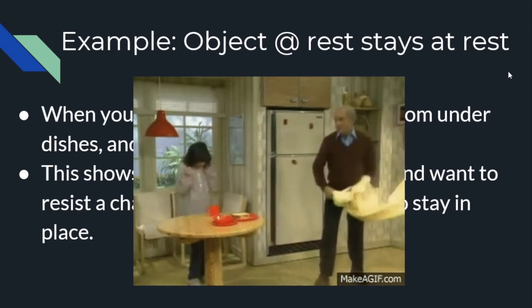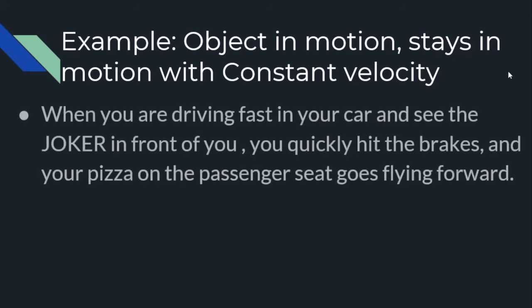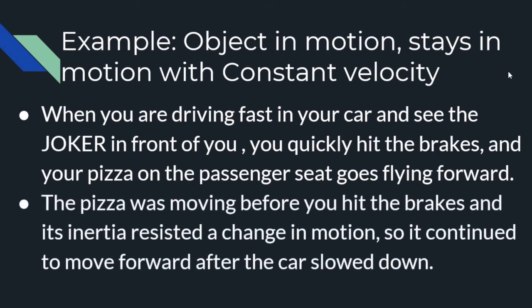Let's talk about an example where an object in motion stays in motion with a constant velocity. So here's our example: you are driving fast in your car and you see the Joker in front of you. You quickly hit the brakes, and your pizza on the passenger seat goes flying forward.